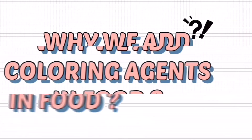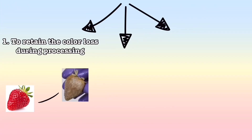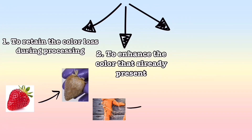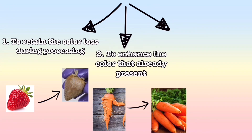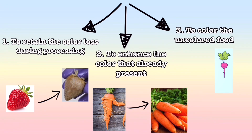So, why do we add coloring agents in food? They are added to retain color lost during processing, to enhance the color already present, and to color foods that are otherwise uncolored.